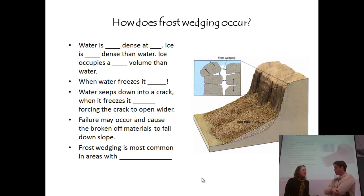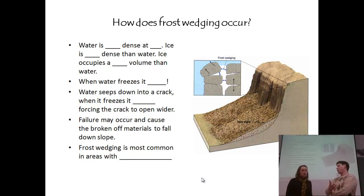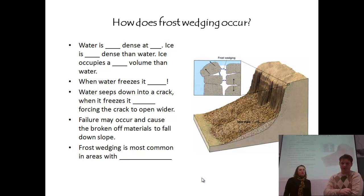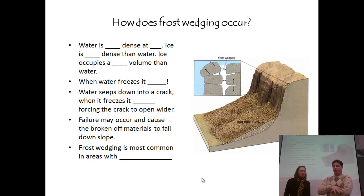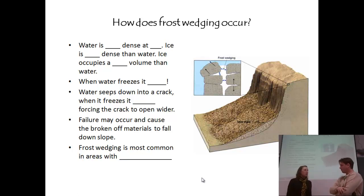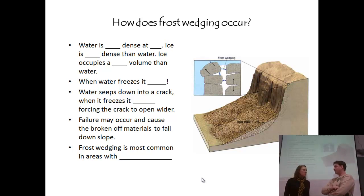And that's weathering, because it's happening in that location — not erosion or mass wasting, that's weathering. It hasn't moved yet. And then failure may occur and cause the broken-off materials to fall down slope. Frost wedging, which is what this process is, is most common in areas where there's a daily freeze and thaw cycle, like often there is here in the winter.